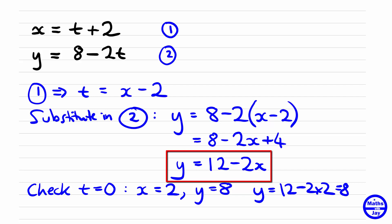We could check another value of t. Let's try 4. If t is 4, that would give us x equals 6, and y would be 8 minus 2 times 4, so y would be 0.